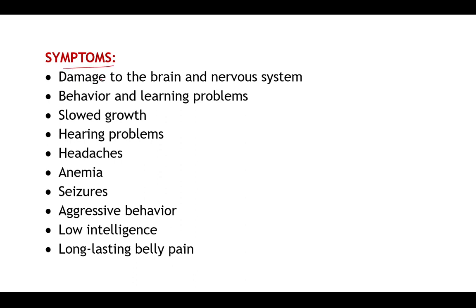Coming to the symptoms of lead poisoning: damage to the brain and nervous system may take place, resulting in behavioral and learning problems. Growth may get slowed down, and there may be hearing problems and headaches. Anemia — decreased oxygen-carrying capacity of the blood — may occur with low hemoglobin levels. Seizures may get precipitated, behavior may become aggressive, intelligence may get affected, and long-lasting belly pain may be seen.